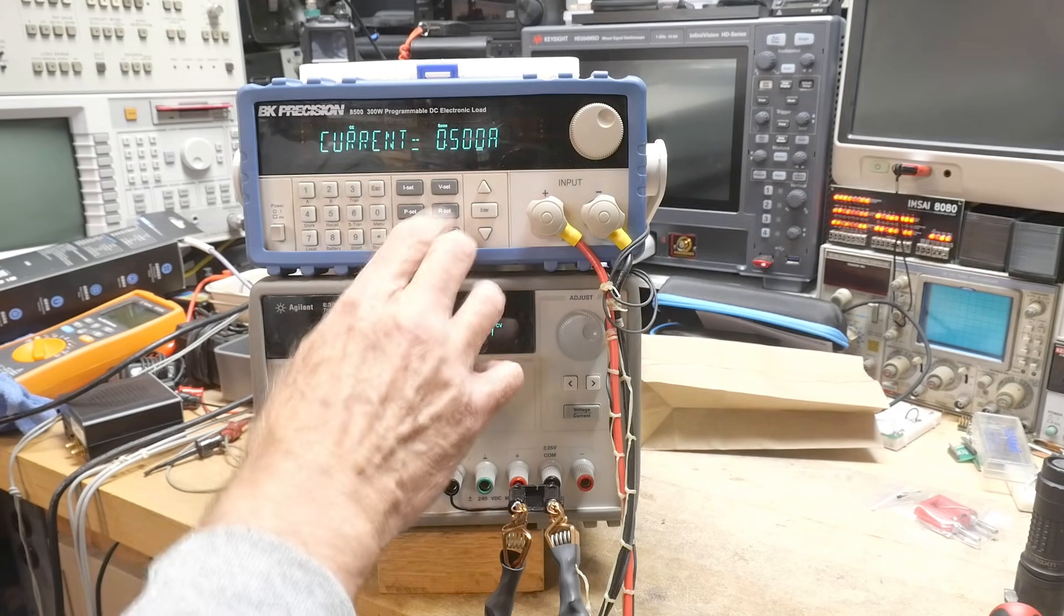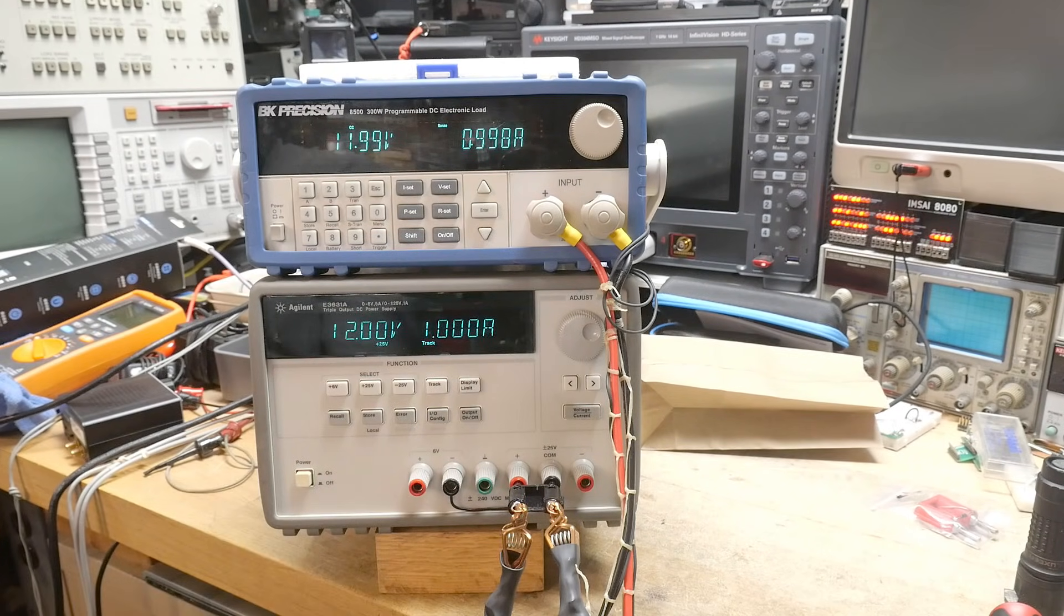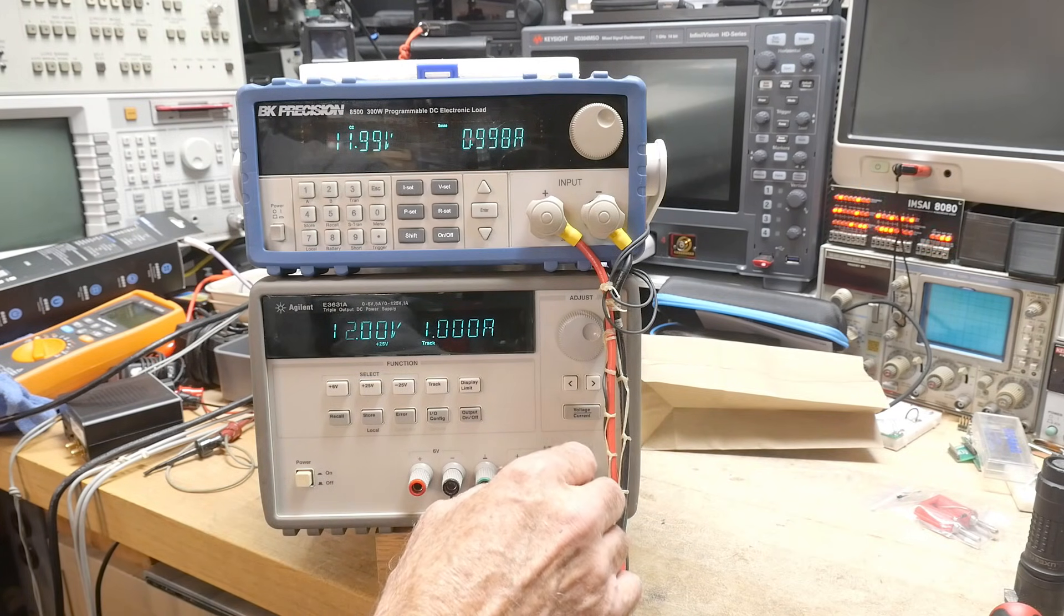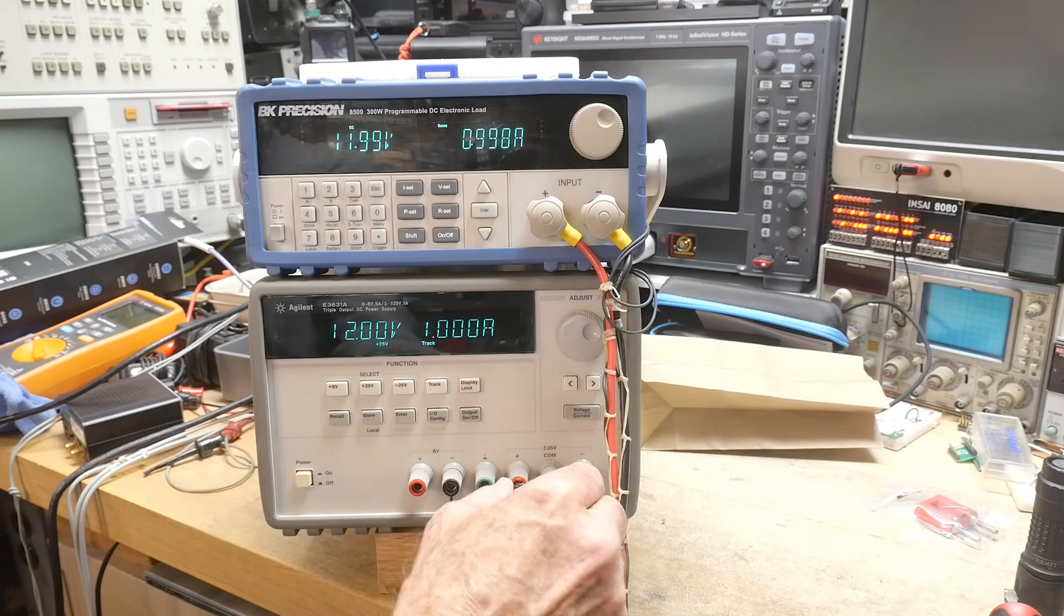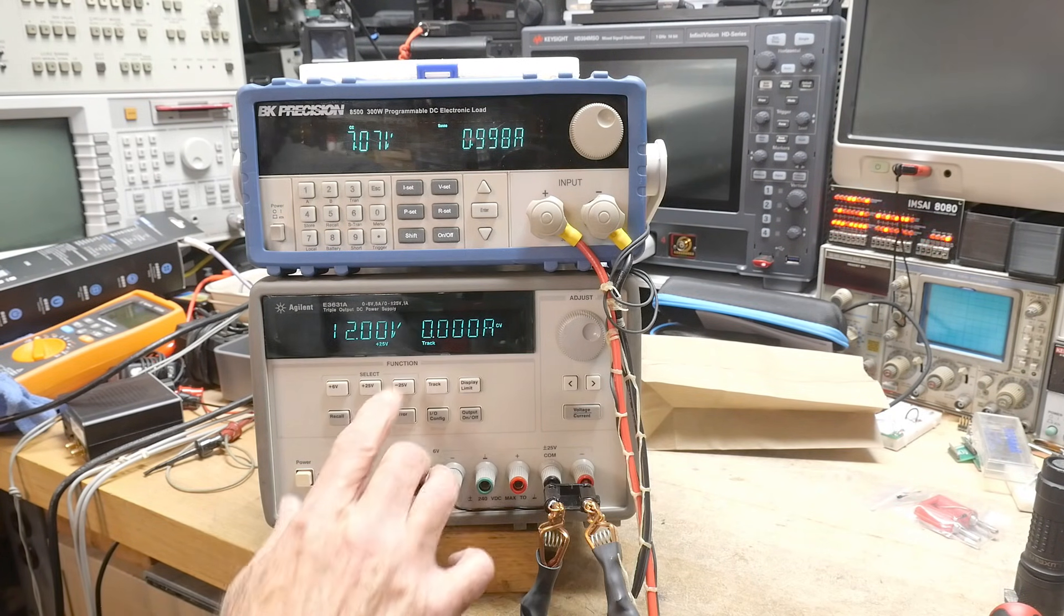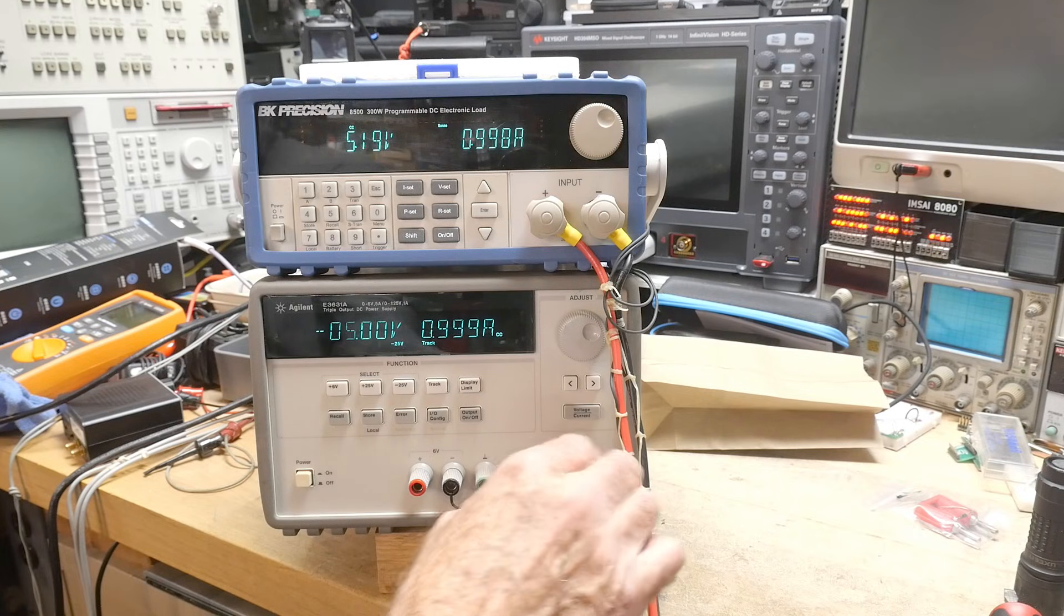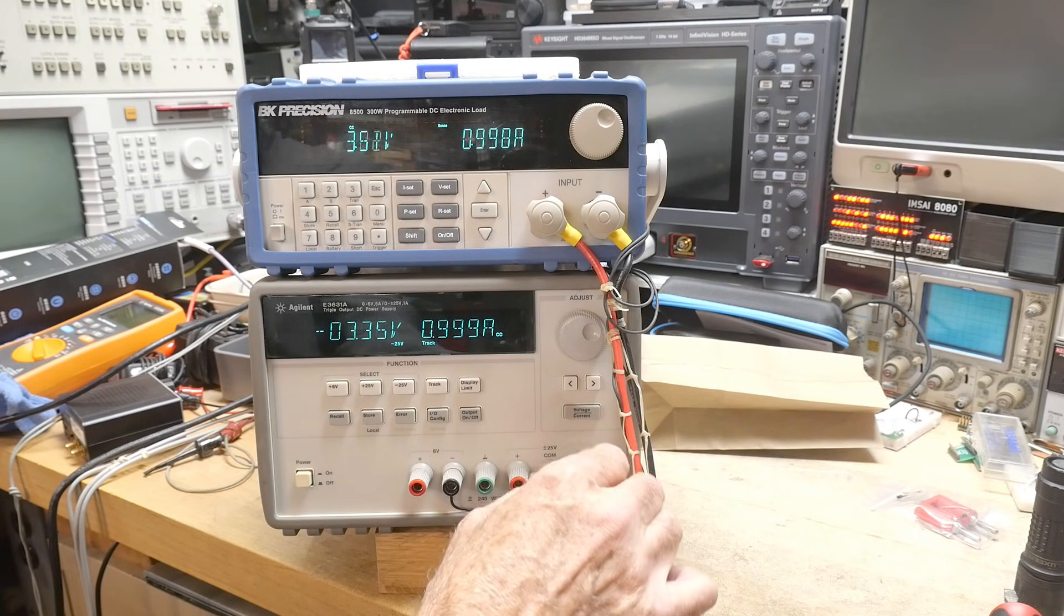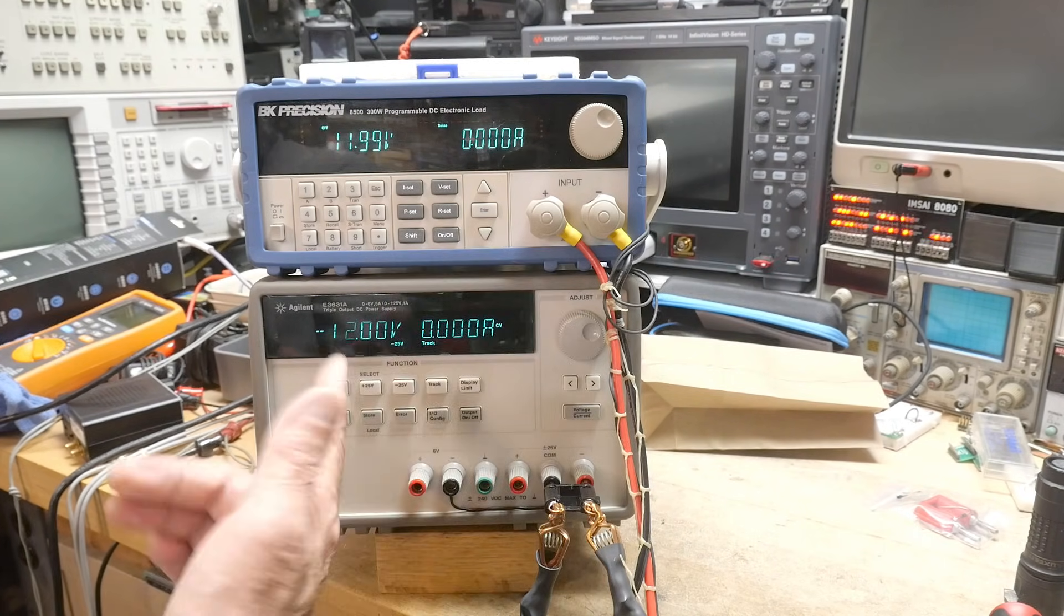Let's go to 1 amp. And 998, 1 amp. So yeah, very nice. All right. And then let's go to the minus 12. And we have gobbledygook. Okay, let's turn this off. We have minus 12.